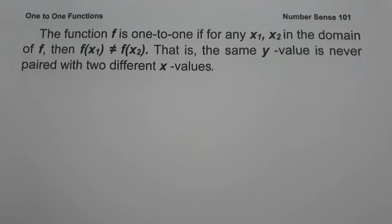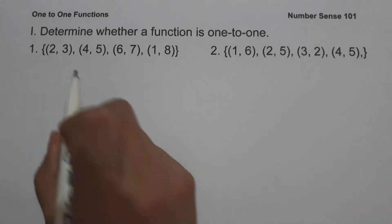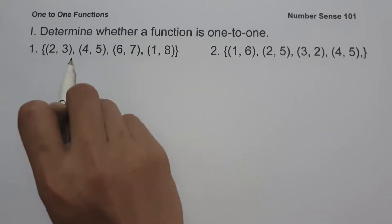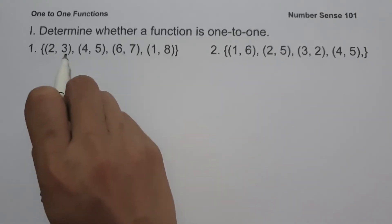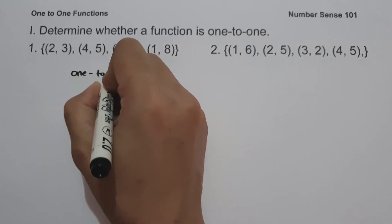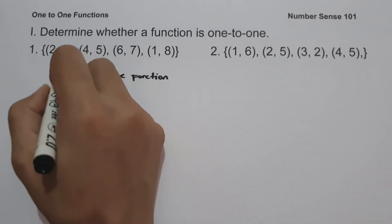Let's start with the first set of examples to determine whether a function is one-to-one. On the first example, we have the set of ordered pairs: (2,3), (4,5), (6,7), and (1,8). This function is one-to-one because there are no two distinct inputs that correspond to the same output — the y value is never paired with two different x values.